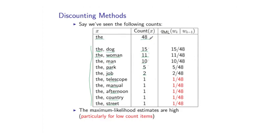So now if we consider the maximum likelihood estimates in this case, there are going to be, for example, 15 divided by 48 for the probability of dog following there. 11 out of 48 for the probability of woman following there. And so on and so on. Just the ratio of this count to the total number of times that I've seen the word there.